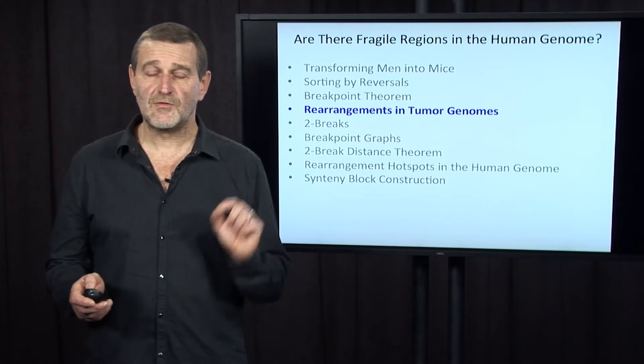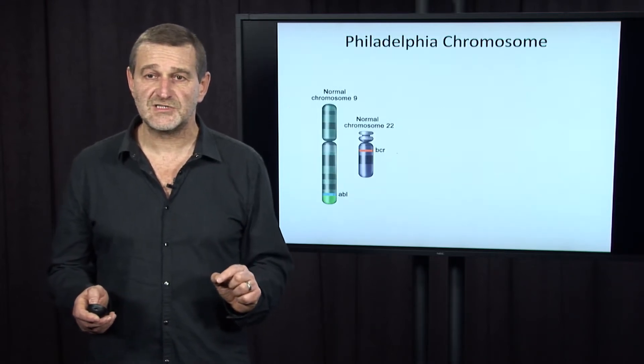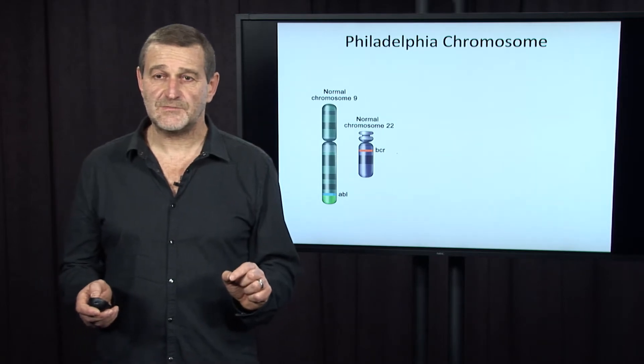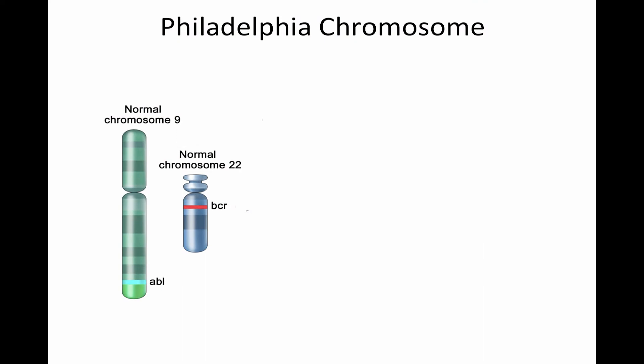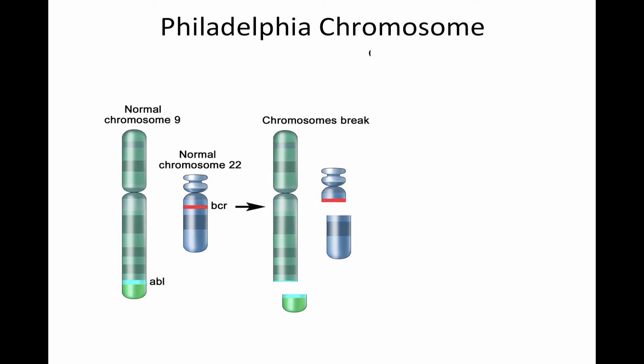We'll start from some examples of rearrangements in tumor genomes, and we'll talk about the Philadelphia chromosome. These are normal chromosomes 9 and 22 in humans, and they have genes called ABL and BCR located on these chromosomes. Now consider a break in two places, one on each of these chromosomes, that separates each chromosome into two. This is not unlike two breaks that reversals do, but in this case these two breaks are applied to different chromosomes.